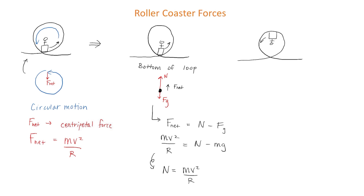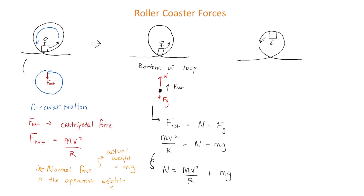We are left with the equation: N = mv²/r + mg. The normal force represents the object's apparent weight — the weight the rider would feel. The object's actual weight is equal to mg.